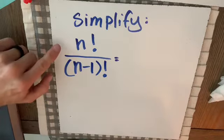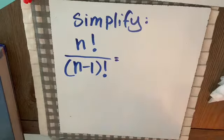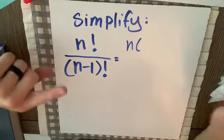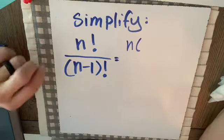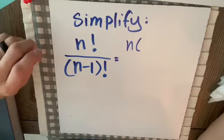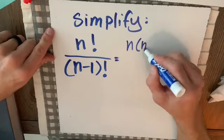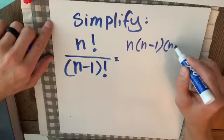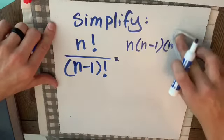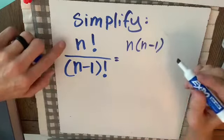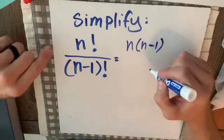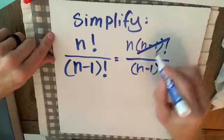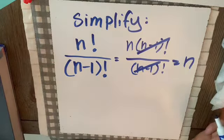Now let's simplify n factorial over (n minus 1) factorial. What is n factorial? It's n times the next one down: n times (n-1) times (n-2) times (n-3) and so on. So I can write n factorial as n times (n-1) factorial, over (n-1) factorial. The (n-1) factorials cancel, giving me simply n.